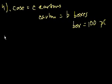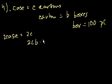So we could say 2 cases equals 2C cartons, right? 2C cartons equals 2 times C, that's how many cartons, and each carton has B boxes, so it's going to be equal to 2CB boxes. And then each of these boxes is going to have 100 paperclips, so times 100.